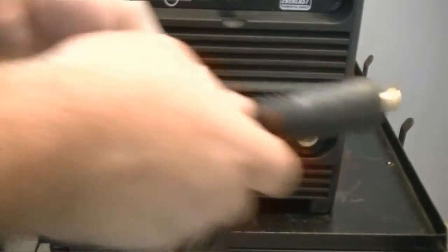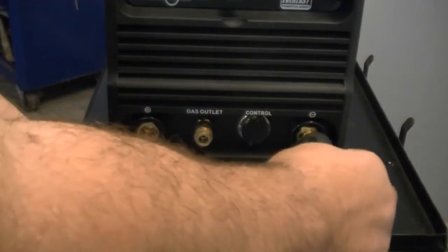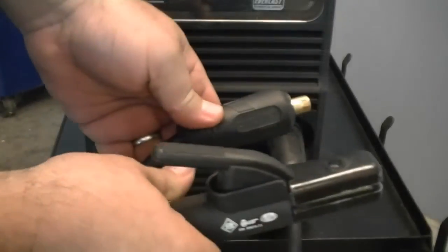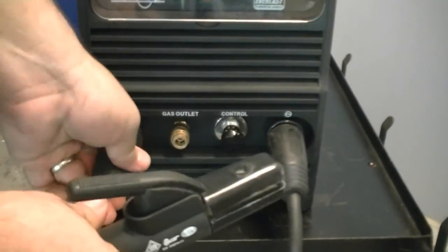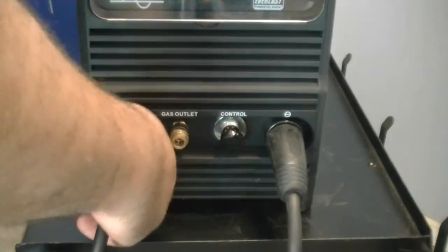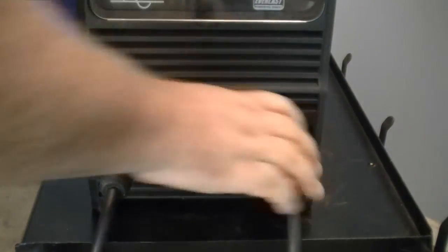To weld in stick mode, make sure the work clamp is placed into the negative position which is on the right side of the unit. The electrode holder should be placed into the positive position which is on the left side of the unit. Most all electrodes use this polarity configuration while stick welding.